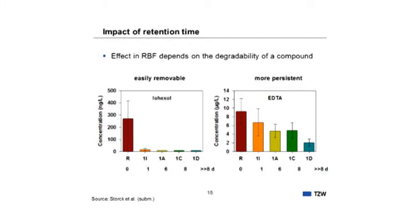It is important to know the compound and what effect certain redox conditions will have on its removal — you can't say every compound will be removed equally under a given redox system. Regarding retention time: at a bank filtration site, a rapidly removed compound like Iohexol shows no retention-time effect — it is simply gone. But for the more persistent complexing agent EDTA, the longer the retention time, the more of the compound is removed.